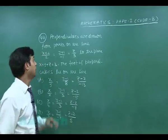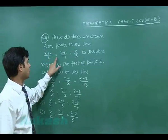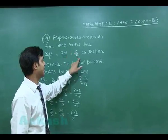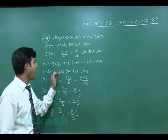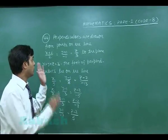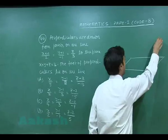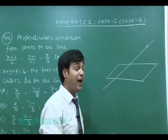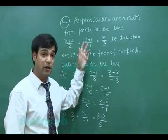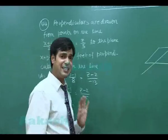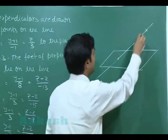Question 44: Perpendiculars are drawn from points on the line x+2/2 = y+1/−1 = z/3 to the plane x+y+z=3. We need to find the line on which the feet of the perpendiculars lie. Let's draw a diagram — there's a plane and a line. Since a₁a₂ + b₁b₂ + c₁c₂ is not zero, the line is not parallel to the plane, so it intersects the plane at some point.